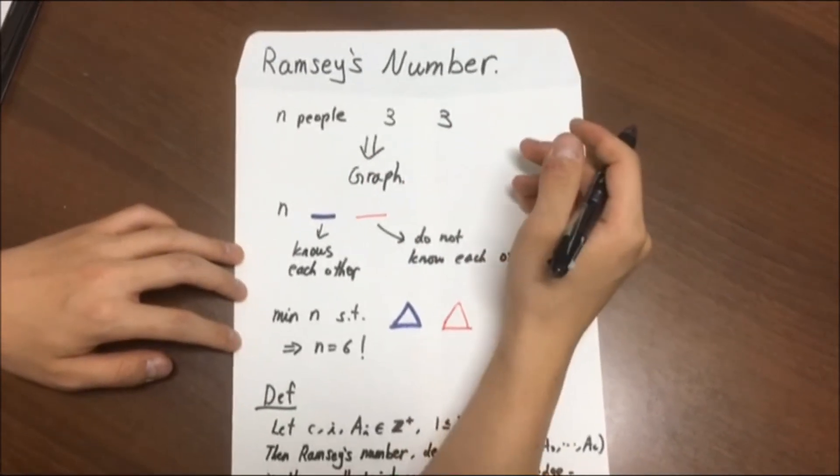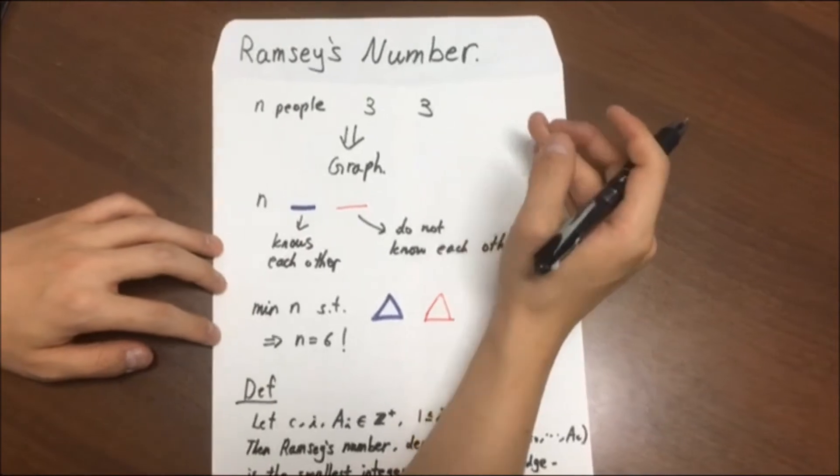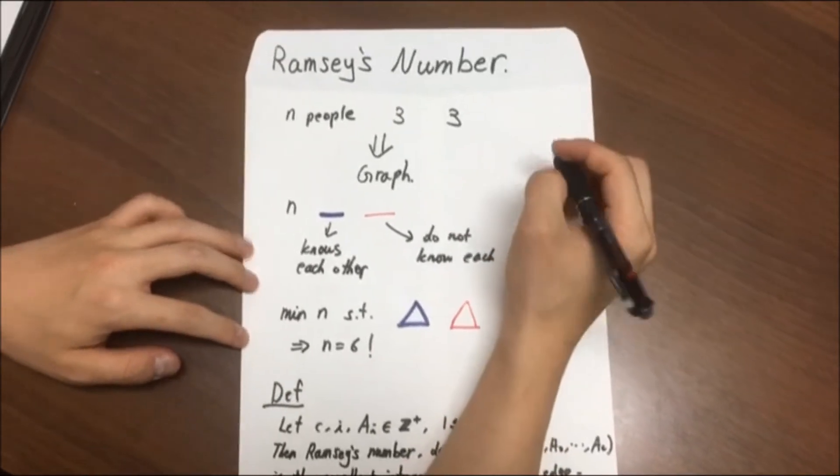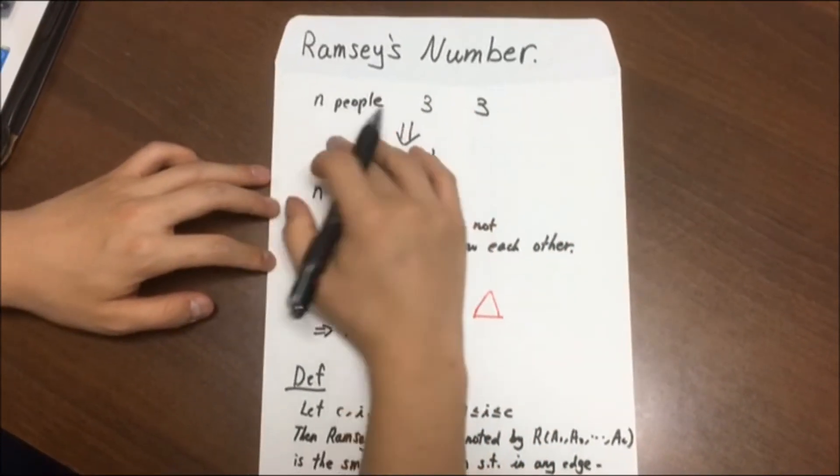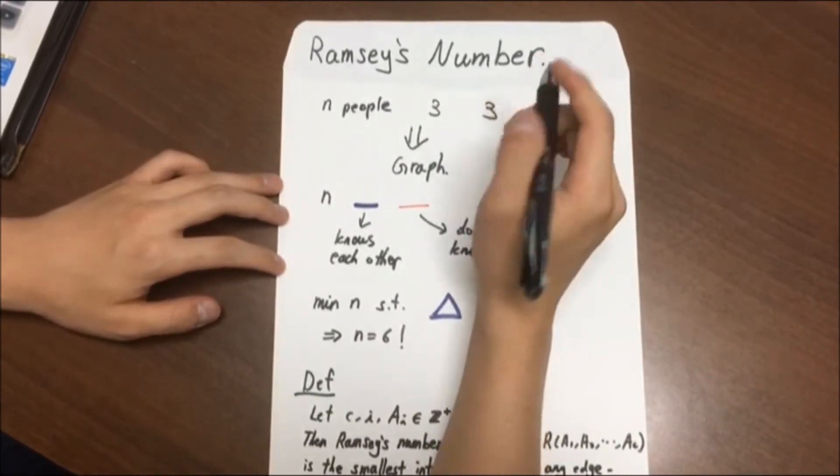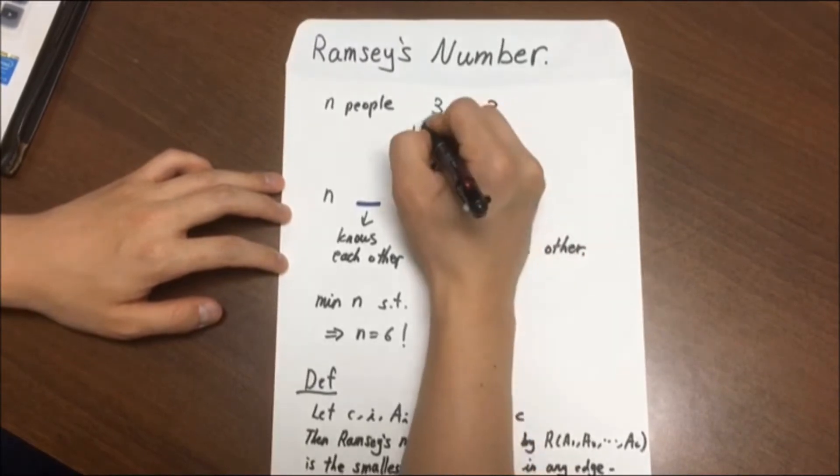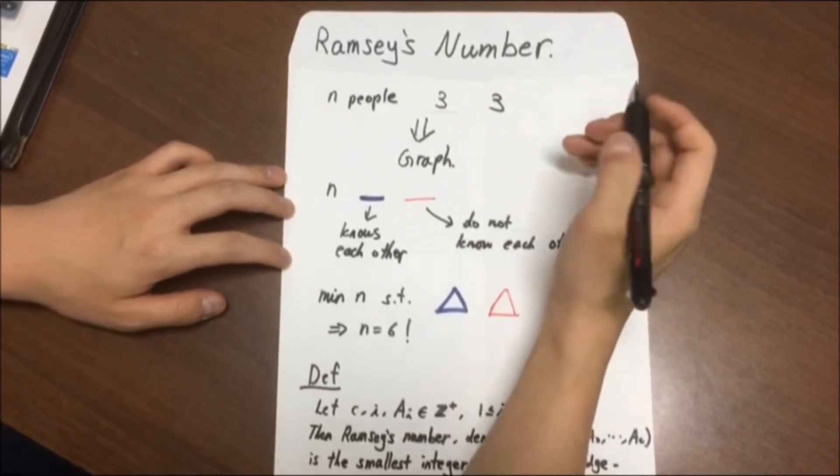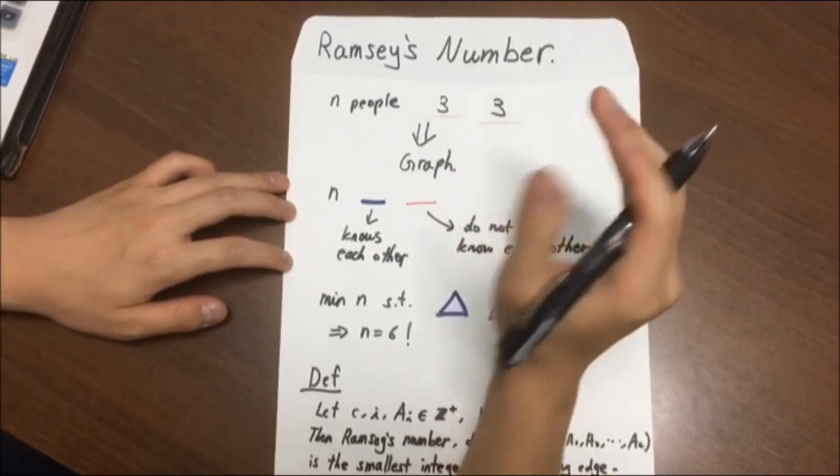Anyways, putting that aside, let us start with a simple example. Suppose there's a party where N people participated, then what is the smallest number of people there should be so that you are guaranteed to have three people who know each other or three people who do not know each other?